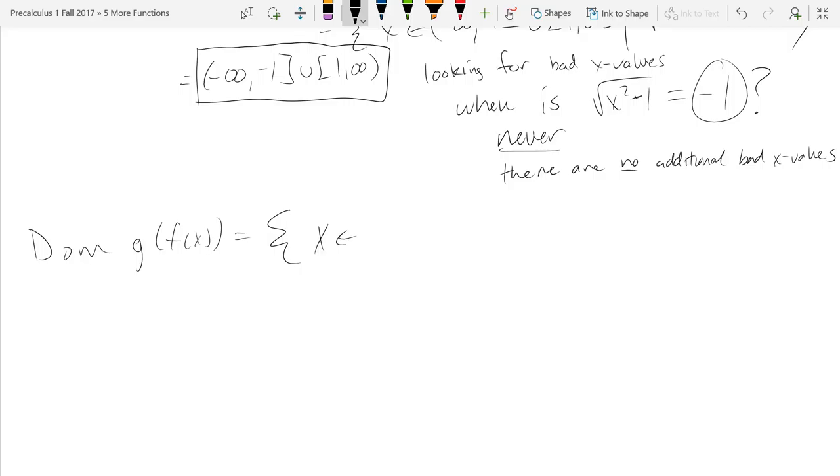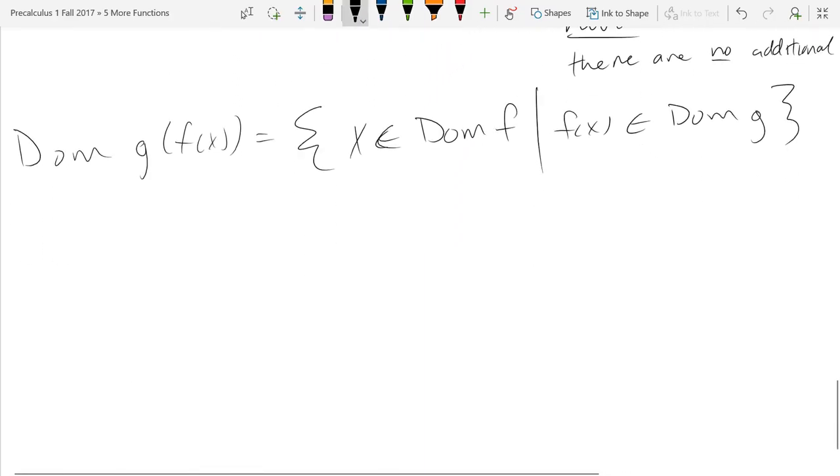So which function is eating first, f or g? Yeah. So f is first. So I have to first make sure that x is in the domain of f, and then I want to see is f of x in the domain of g. And again, I wrote the first part down because I'm just looking at who's eating first. So f is eating first, so that's the first condition you have to meet. And then the other condition is whatever the output of f is has to be a valid input for g.